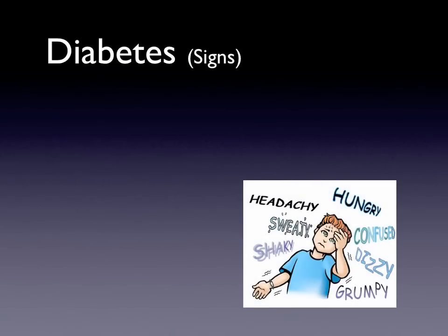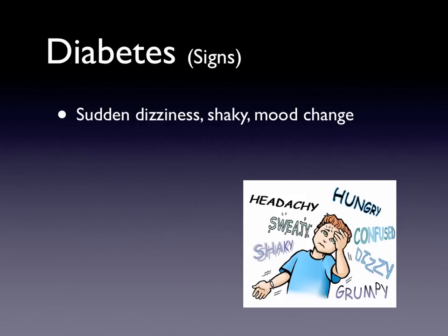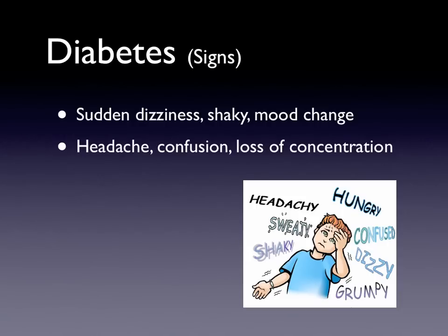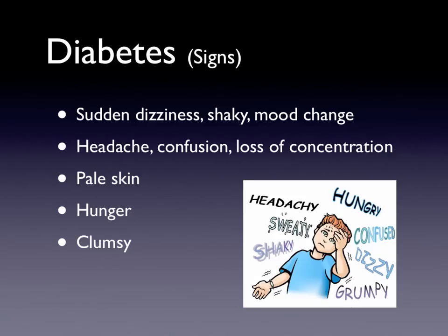Signs of a diabetic emergency include sudden dizziness, shaking, or a mood change — the person suddenly becomes grumpy. Other signs include headache, confusion, loss of concentration, and inability to perform simple tasks. Some individuals will have pale skin. Others may complain of being hungry or thirsty, or have problems walking. Unlike stroke, a diabetic emergency typically causes weakness throughout the entire body, not just one side. In severe cases, you may see a seizure.